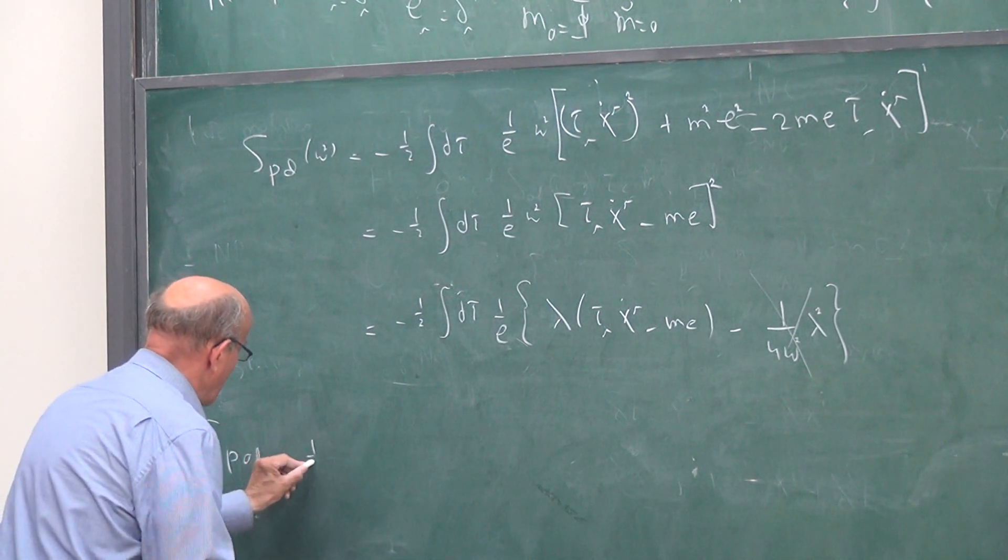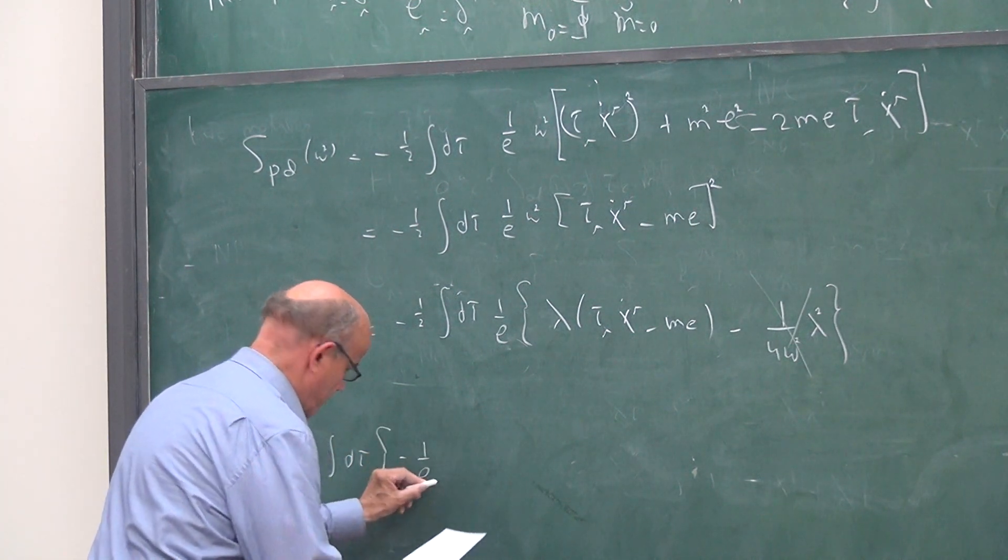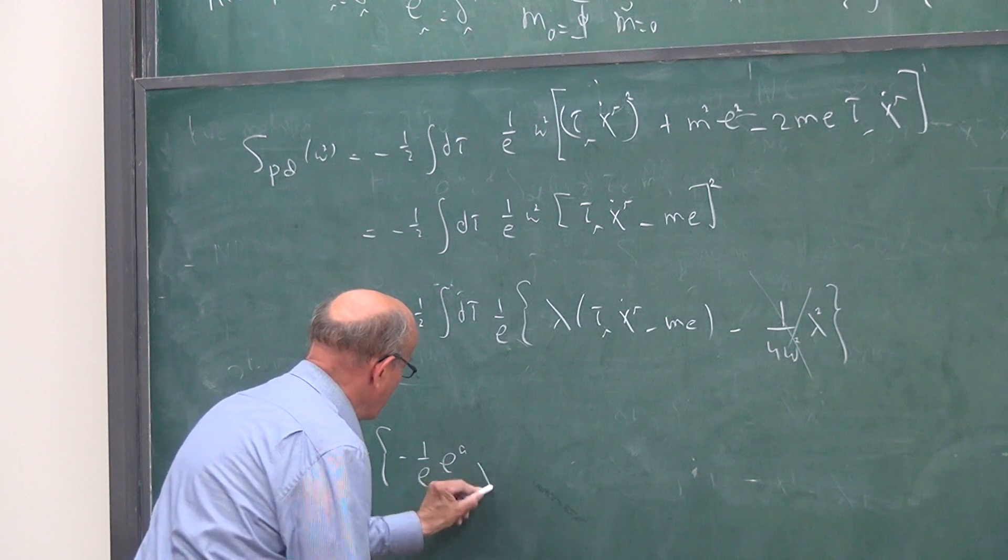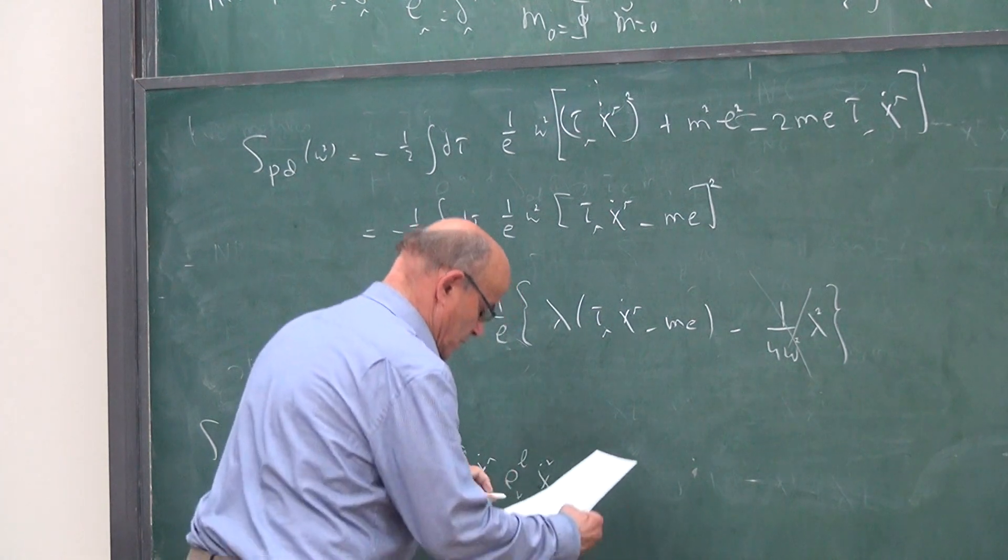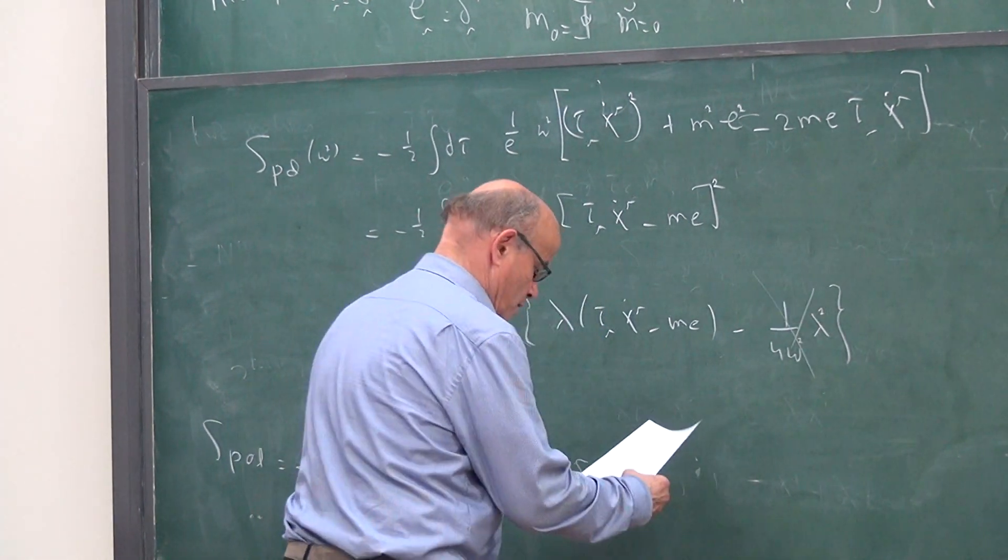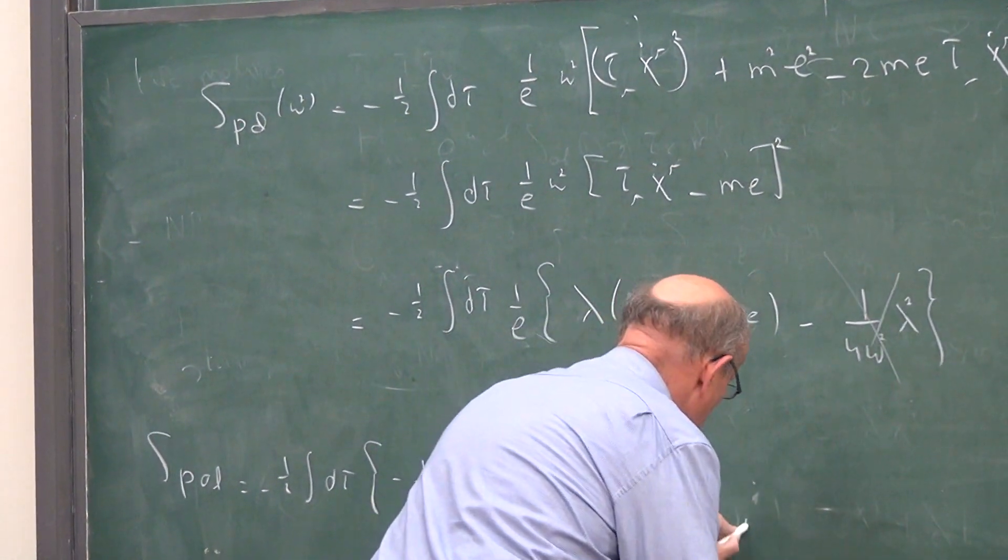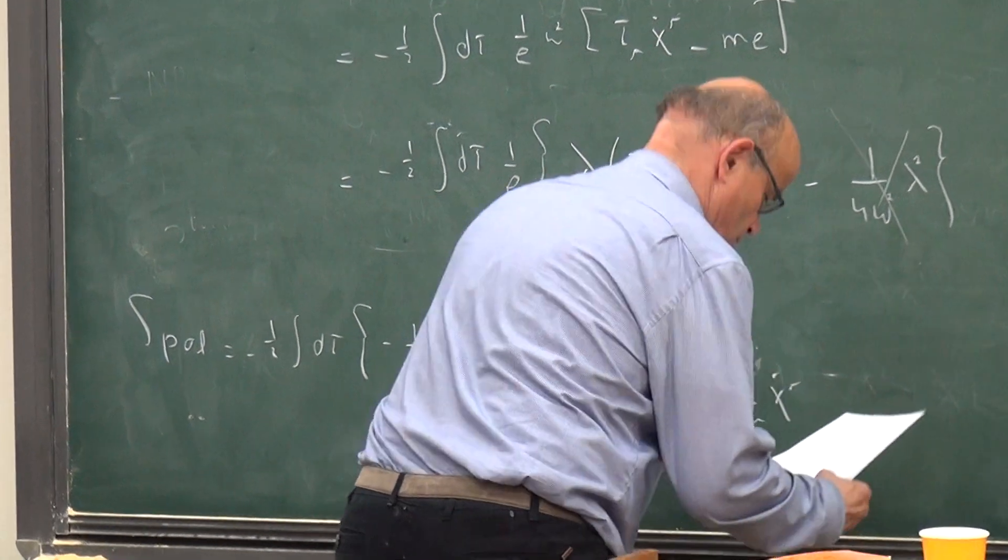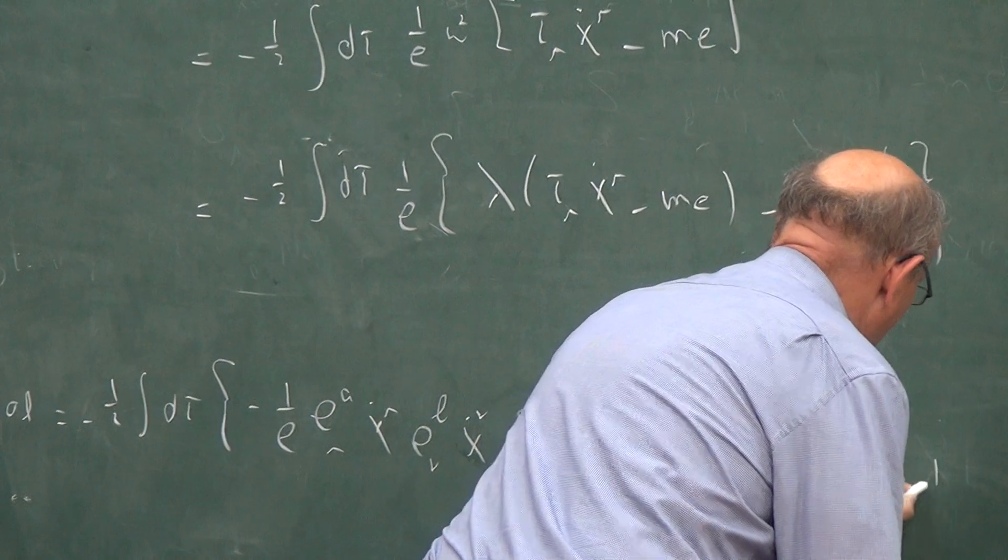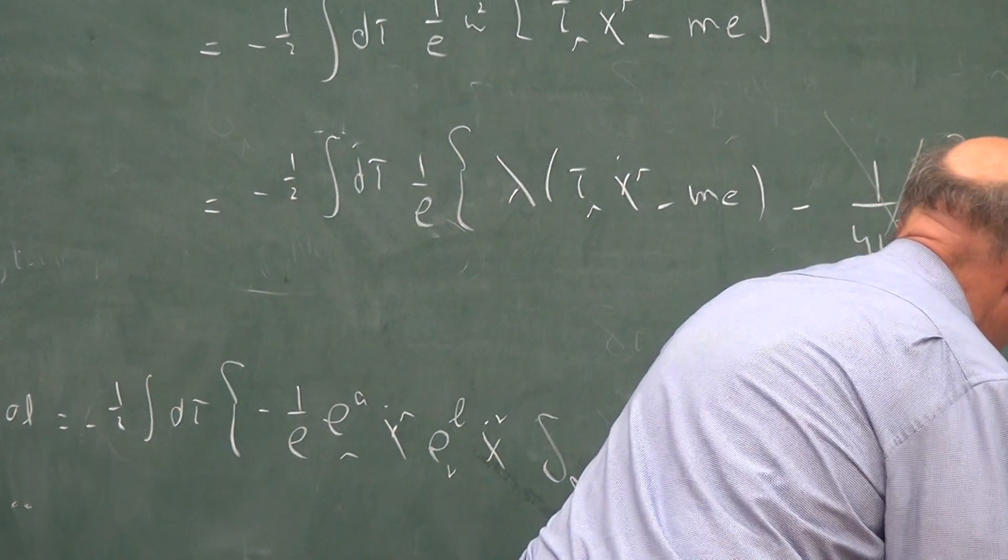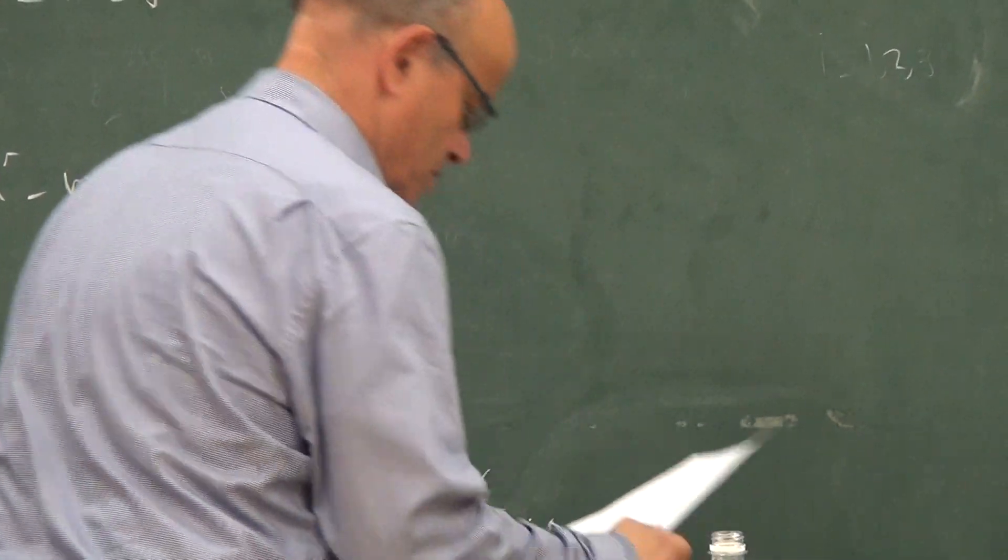is equal to minus 1 over 2 integral d tau times minus 1 over e times e nu a dot mu, e nu b dot mu delta ab, plus 2 over e tau nu a dot mu n nu a dot mu